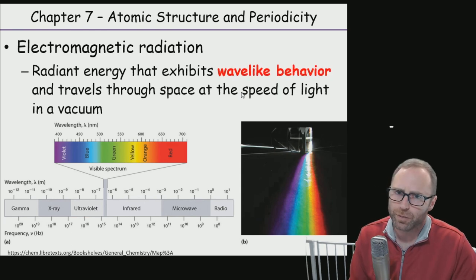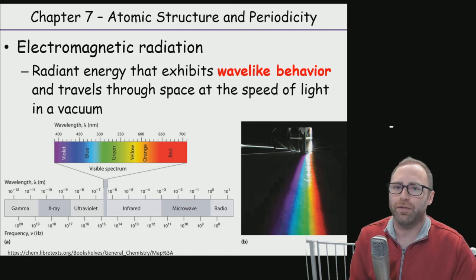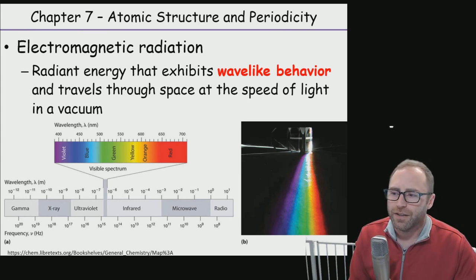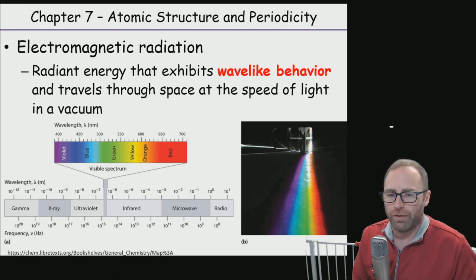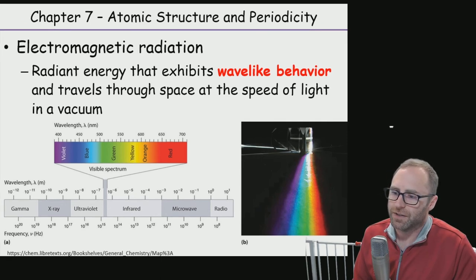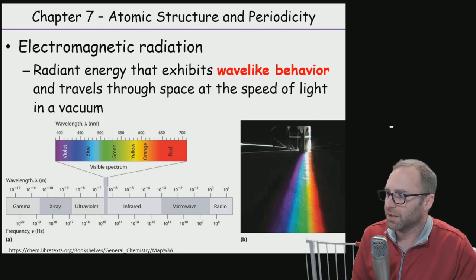To start out this chapter we need to have an understanding of what electromagnetic radiation is. Electromagnetic radiation is some kind of radiant energy that's going to have wave-like behavior. We've got an image down here and a link to the images from that LibreText website.